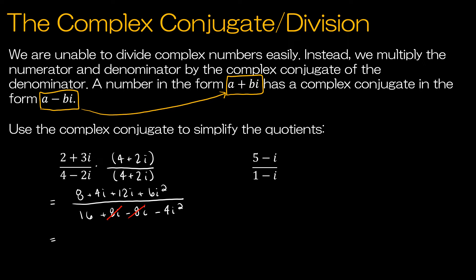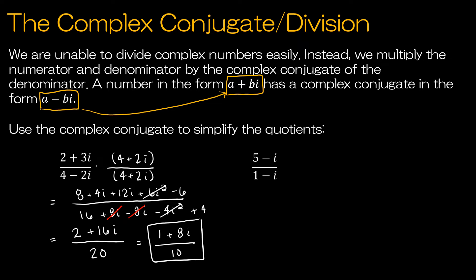Now I'm just going to combine like terms. Plus 6i² turns into minus 6. Minus 4i² turns into plus 4. In the numerator, 8 minus 6 is 2, and then plus 16i. In the denominator, I have 16 plus 4, which is 20. I can see every term is even, so I'm going to divide everything by 2. My final solution is 1 plus 8i, divided by 10.